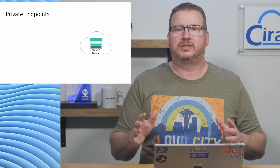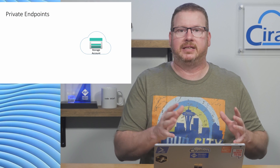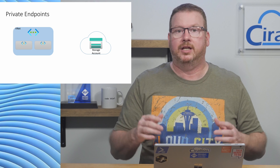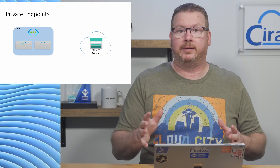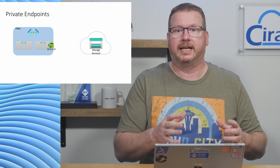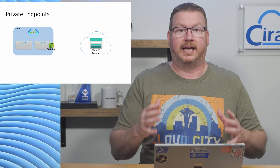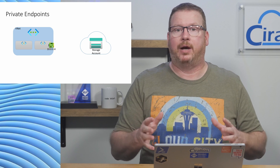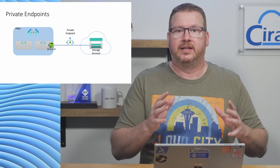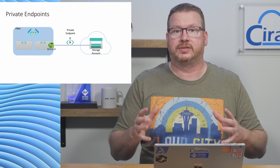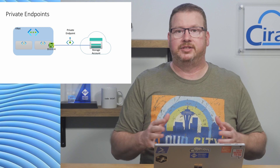Let's start with a quick overview of how private endpoints work. Take a service that's typically available on the public internet — a storage account for example. With private endpoints, a virtual network interface card, or NIC, is added to the subnet that gets a private IP address, and now we can access that resource the same as other resources on the private virtual network.